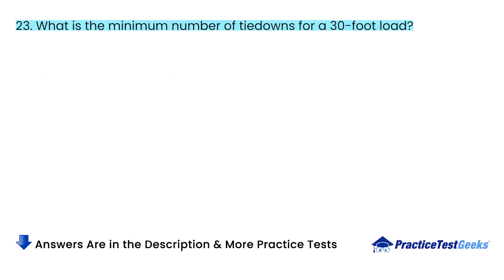What is the minimum number of tiedowns for a 30-foot load? A. Five. B. Three. C. Eight. D. Six.